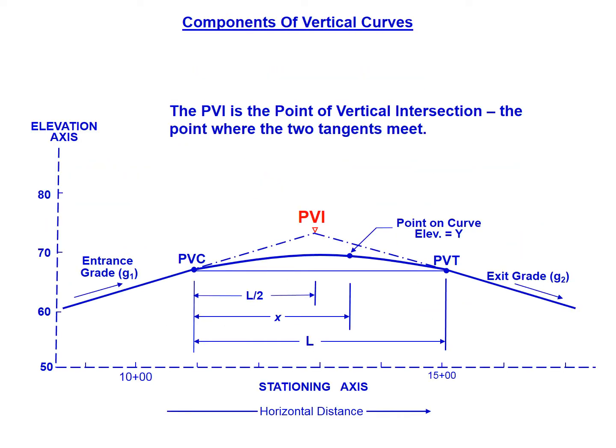The PVI is a very important point for vertical curves. This is where the two tangents meet or the two grades meet. We have G1 as our entrance grade and G2 as our exit grade, and those two grades will intersect at the PVI, the point of vertical intersection.